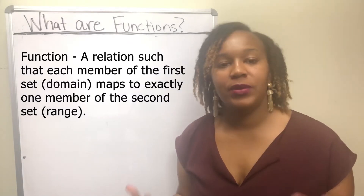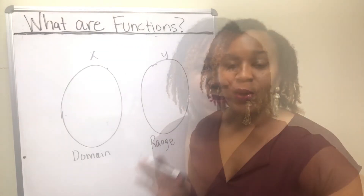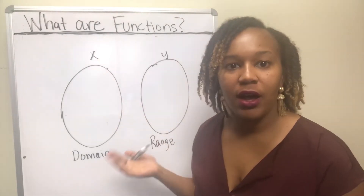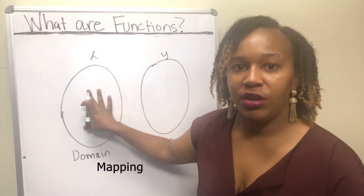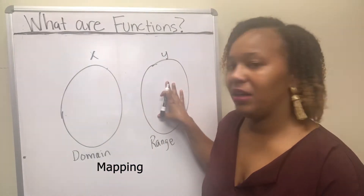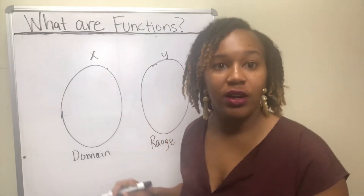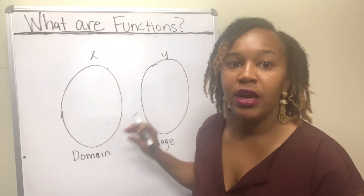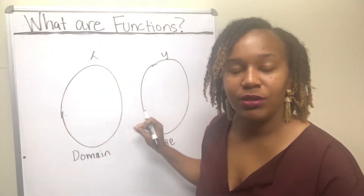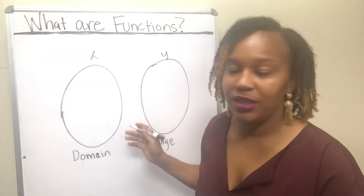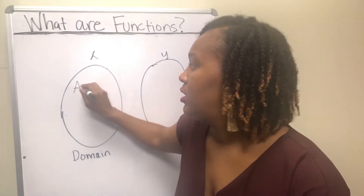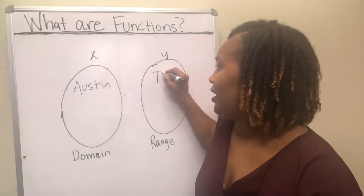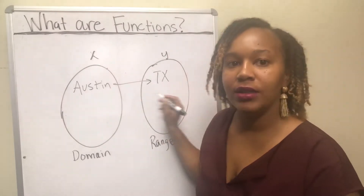Let's look at some practical examples. I have two egg-shaped circles on my board, and what I'm going to show you is what's called a mapping, where you take each element in your first set and map it to each element in your second set, the range. My domain is going to be a list of cities, and I want to map them to the state they belong to, so my range will be various states. Austin maps to Texas.